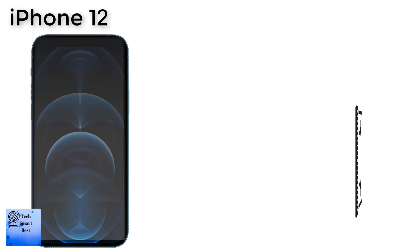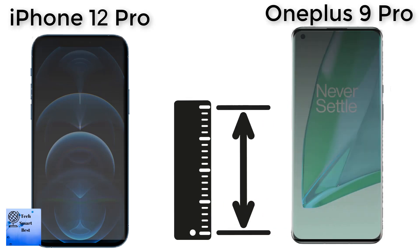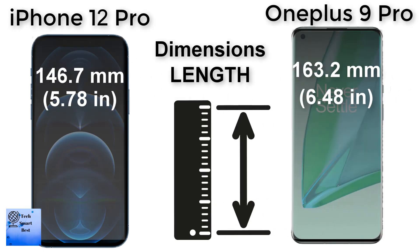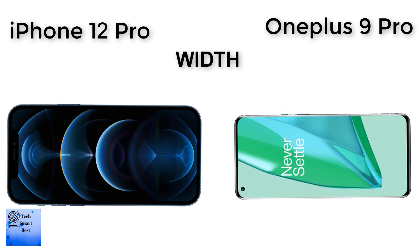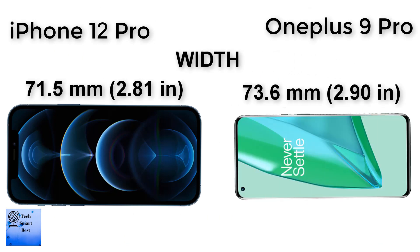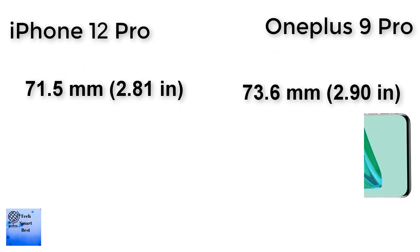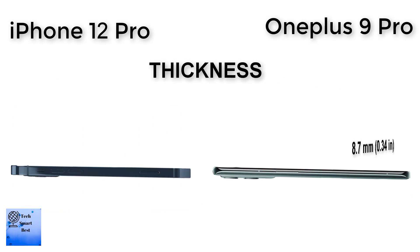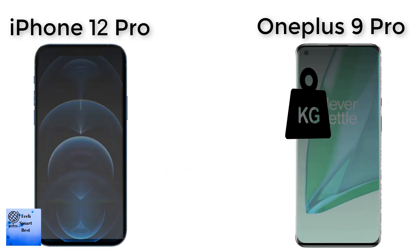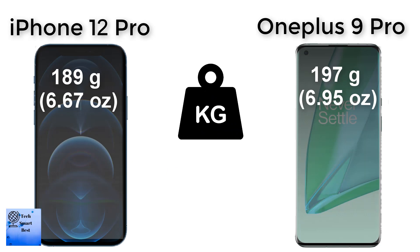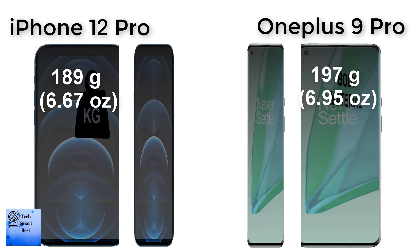The body comparison between both smartphones. The dimension of the OnePlus 9 Pro is 163.2 x 73.6 x 8.7 mm. The dimension of the Apple iPhone 12 Pro is 146.7 x 77.5 x 7.4 mm. The weight of the OnePlus 9 Pro is 197 grams, and the weight of the Apple iPhone 12 Pro is 189 grams.